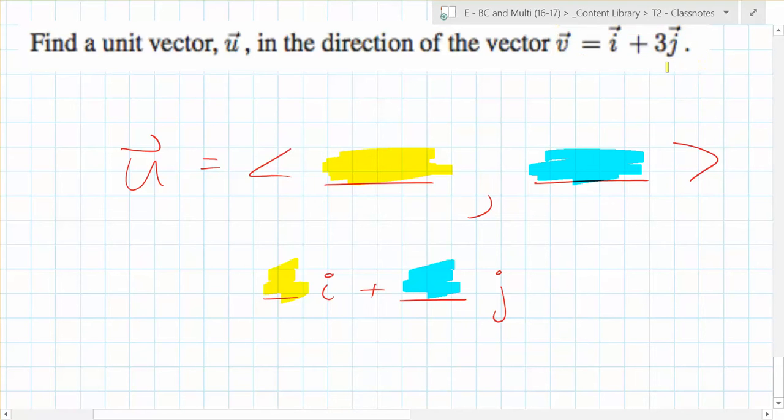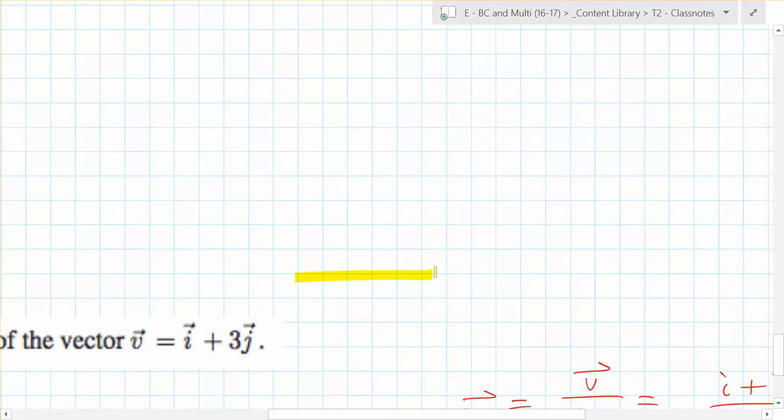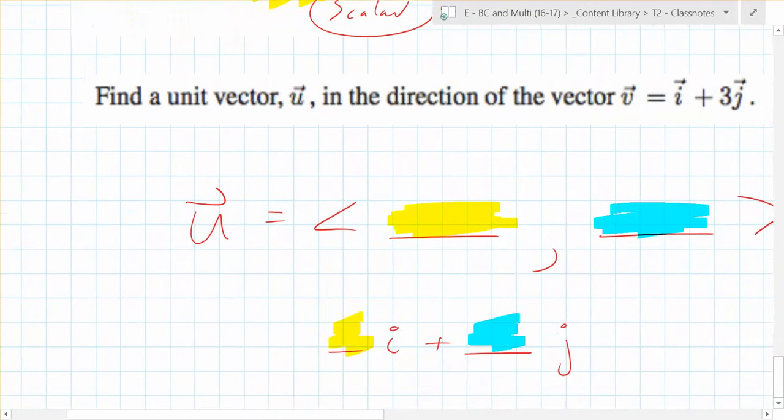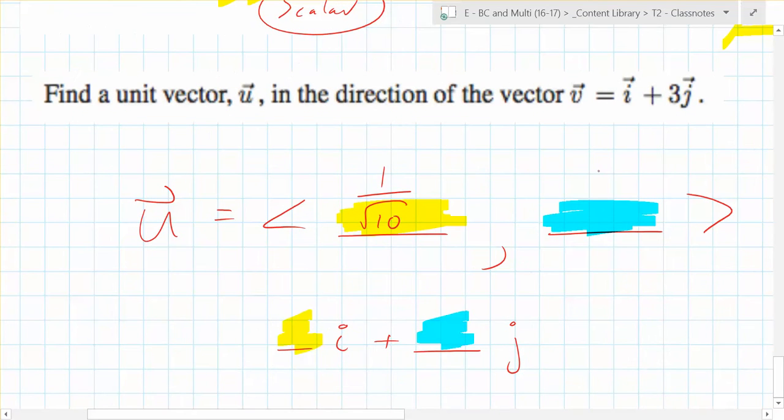Root 10. How do you know that? Well, what is this vector? It goes over one and it goes up three, right? So what's the magnitude? It's the square root of 10. So what's that yellow gonna be? One over root 10. And what's the blue gonna be? Three over root 10.